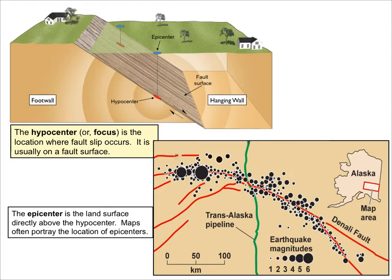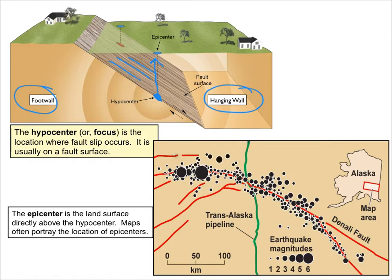Here we have a block model of a fault plane separating a hanging wall from a foot wall. The fault plane is this brown striated surface. When slip occurs on that fault plane, it always initiates at a single point — we call that point the hypocenter or the focus: the location of slip initiation on the fault surface at depth. The epicenter is the surface projection of the hypocenter or focus, and that is what we most often discuss when talking about earthquake locations.